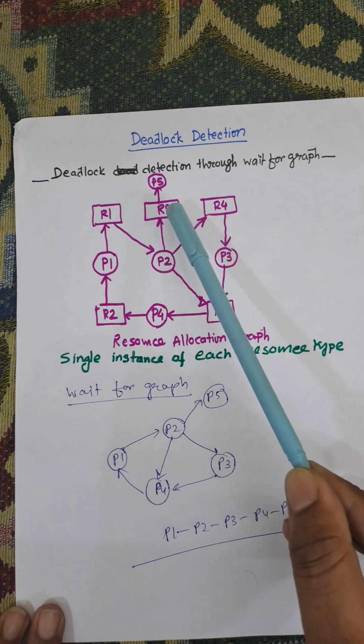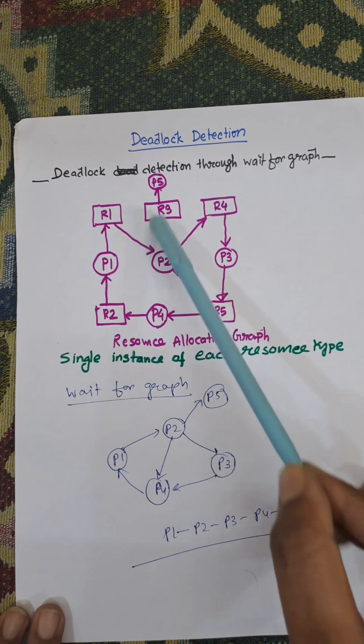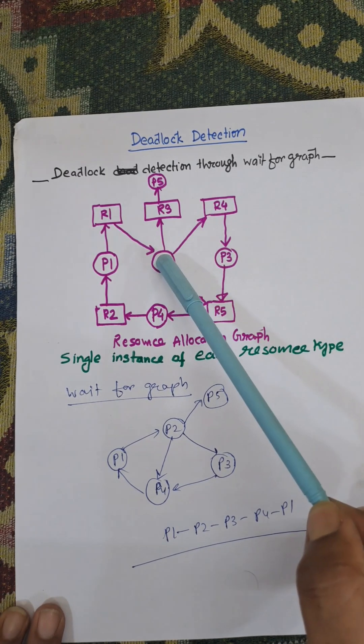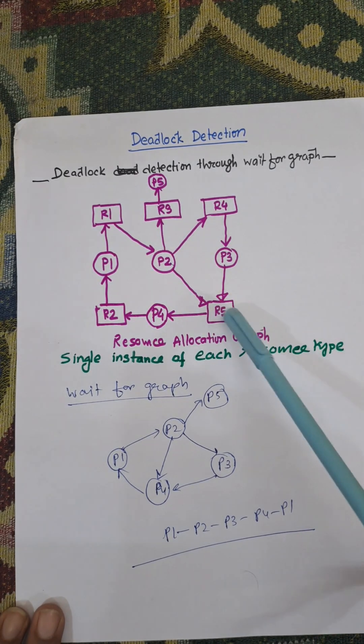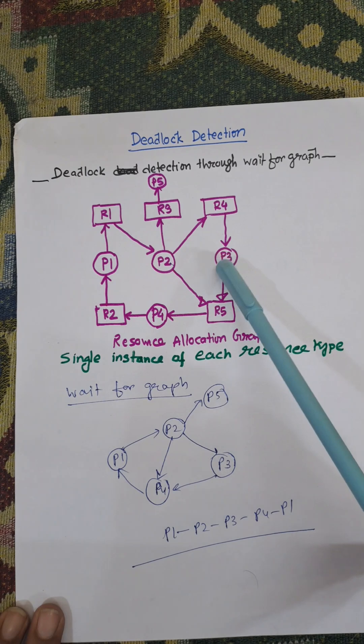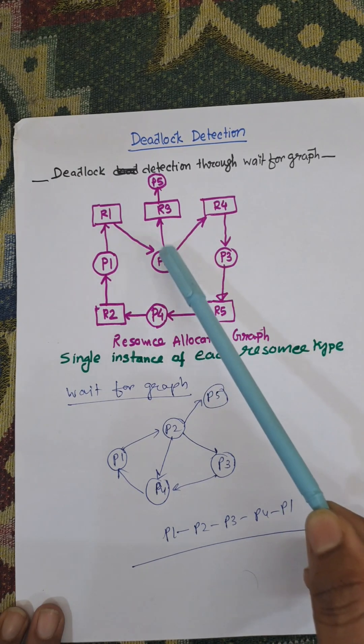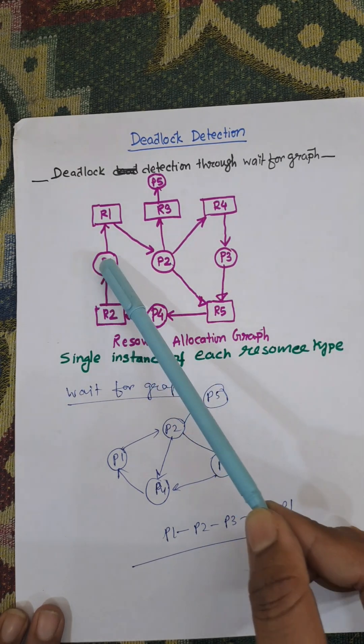When you delete R3, then P2 to P5. When you delete R4, then P2 to P3. When you delete R5, then it goes to P3 to P4, P2 to P4. From P4 it is moved to P1.